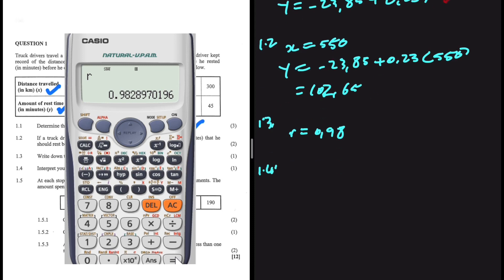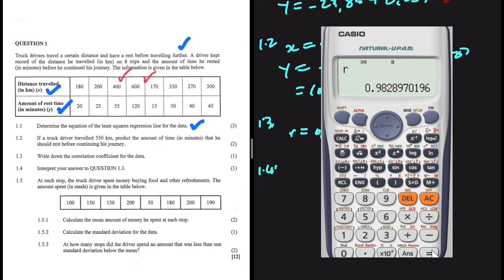1.4. Interpret your answer to question 1.3. Well, the phrasing of your answer will be different from probably other people. But basically, there's a strong correlation between the distance traveled and the amount of rest time. As you can clearly see, it is 0.98. If it was 0.2, 0.1, then there would be a very weak correlation between the X and the Y. But in our case, we have a very strong correlation. So the phrasing of that answer will be different, but basically, there's a strong correlation between the distance traveled and the amount of rest time in minutes.